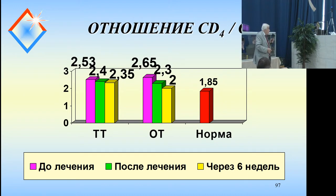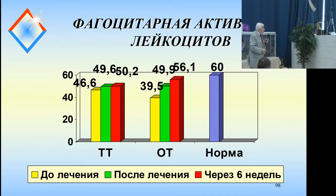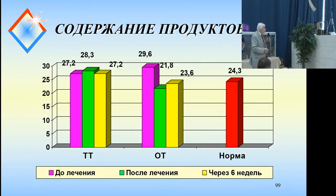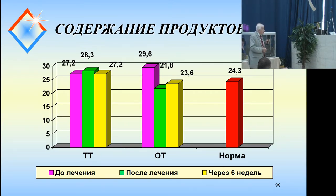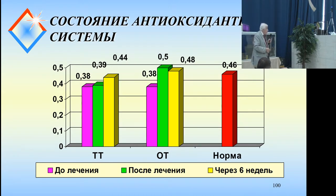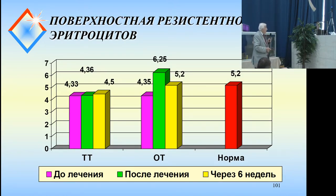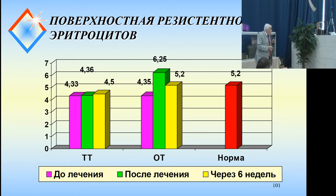CD4 and CD8 ratio — we see the same results. The next slide shows phagocytic activity of leukocytes: the norm is 60 and we got 56.1 as the result from ozone therapy following six months. For POL products with ozone therapy following six months, we have a good picture for the antioxidant system — the same results.